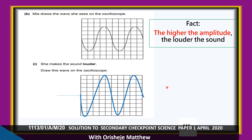The amplitude on the original wave is 3 units. To show a louder sound, increase it — draw the wave up to 4 or 5 units. Any amplitude above 3 will be considered correct.